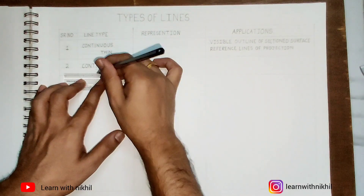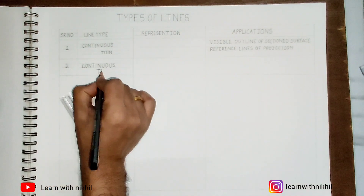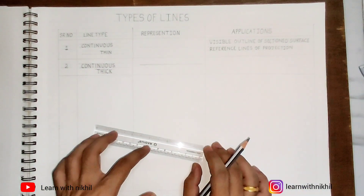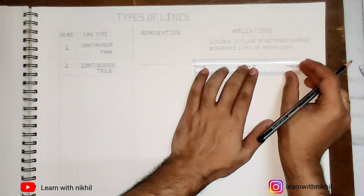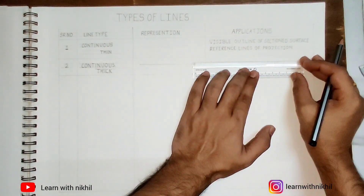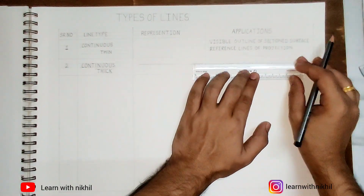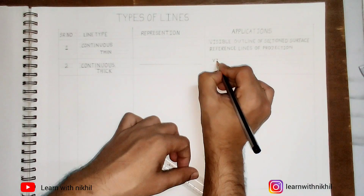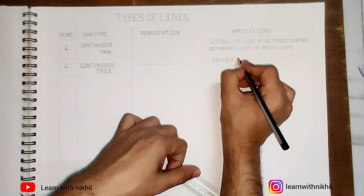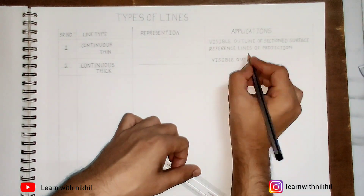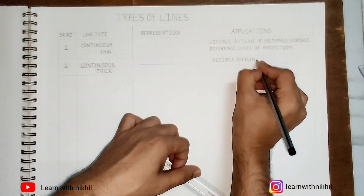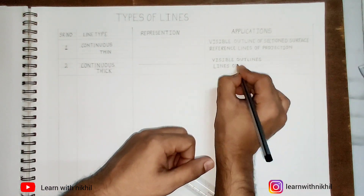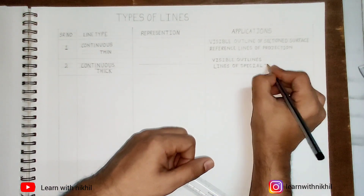The second is the continuous thick line. It is a dark, thick line. The lines which are visible in the diagram should be drawn with a thick line. It is used for a visible outline or lines of special importance.